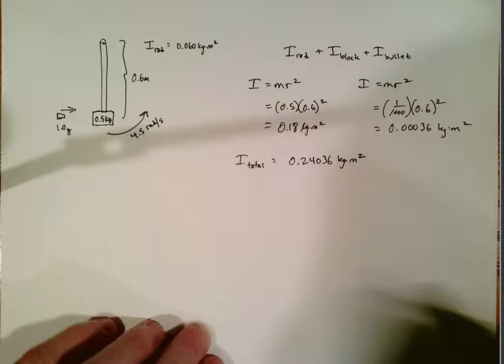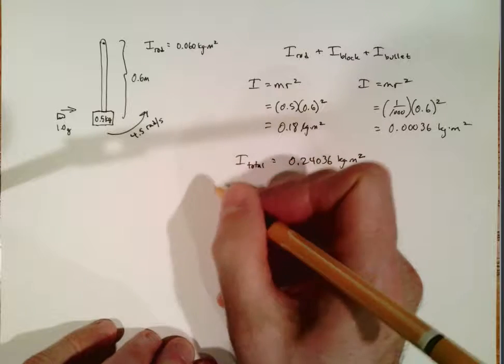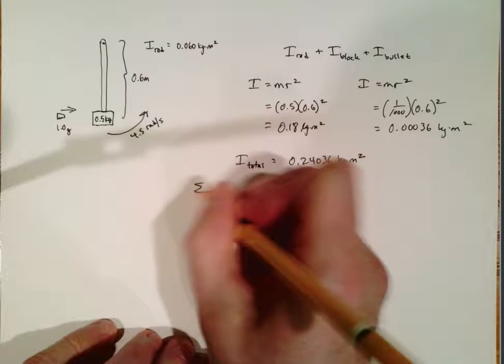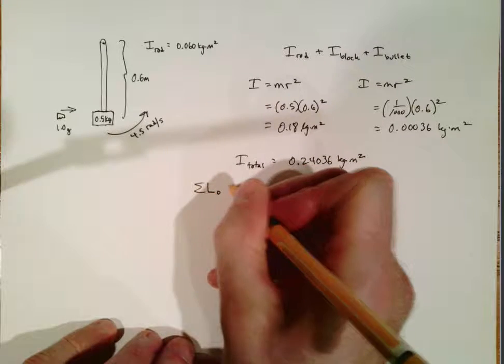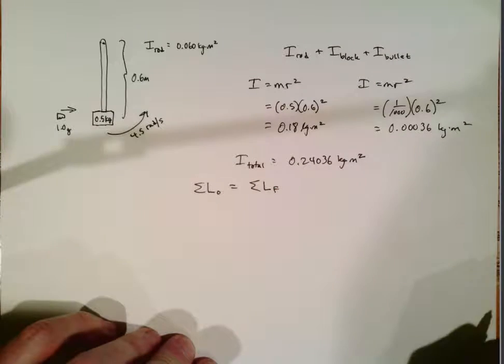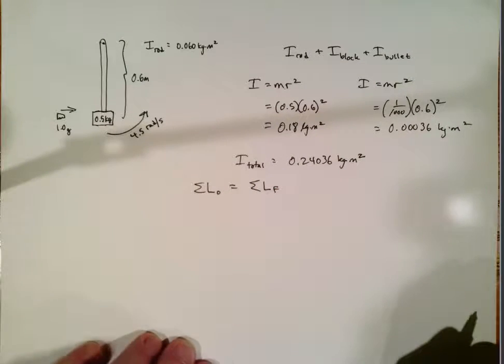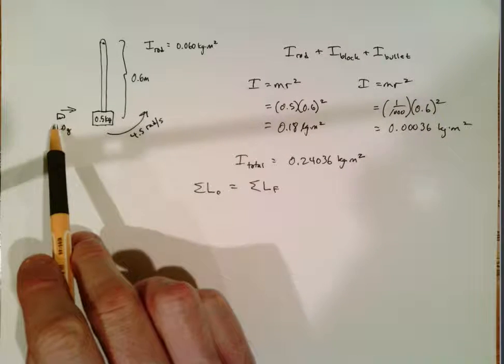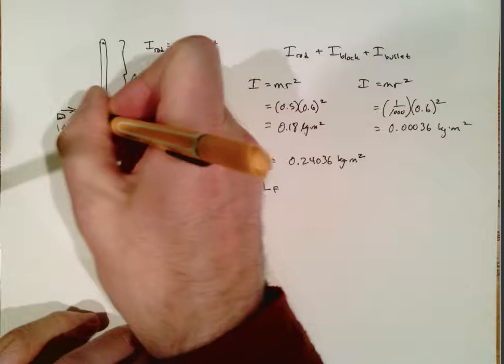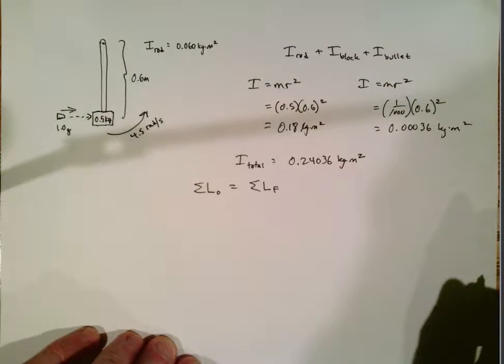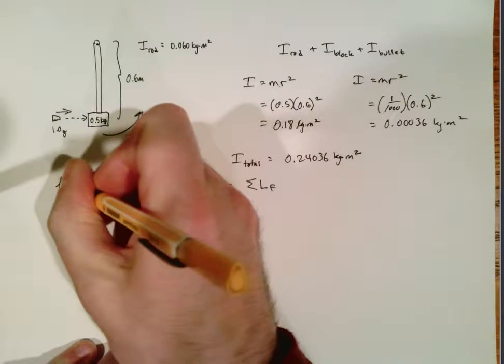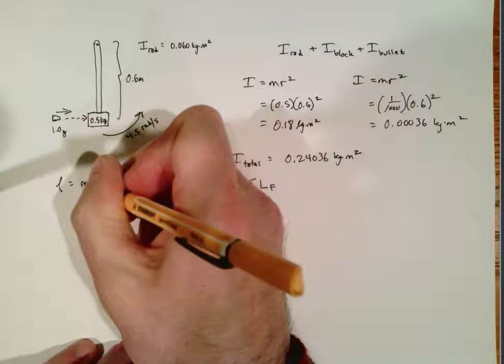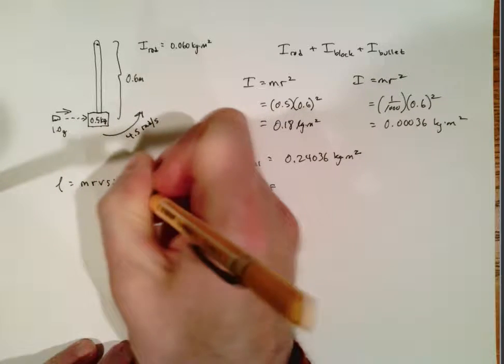In this case angular momentum. So we're going to add up all the angular momentum before the collision and it's equal to all of the angular momentum after the collision. Now before the collision the only thing that's moving is the bullet and it's moving essentially in a straight line. And so the formula for angular momentum of an object moving in a straight line is m times rv sine theta.